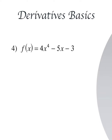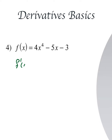Let's check: f(x) = 4x^4 minus 5x minus 3. So f prime(x): we drop down the 4 and multiply, giving 4 times 4 x to the power 3. For the term minus 5x, since it's in the form ax, the derivative is just minus 5. The derivative of the constant minus 3 is 0. So the final answer is f prime(x) = 16x^3 minus 5.